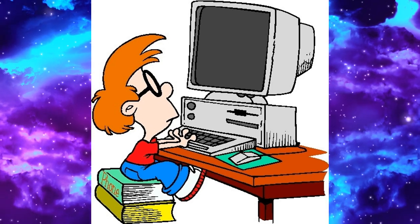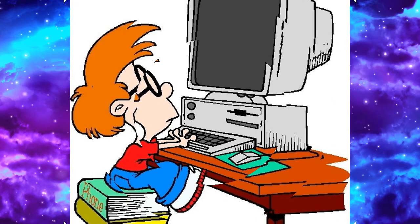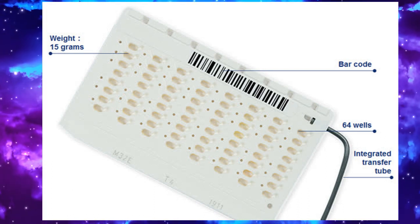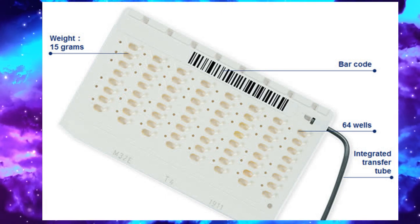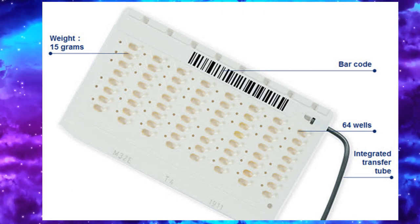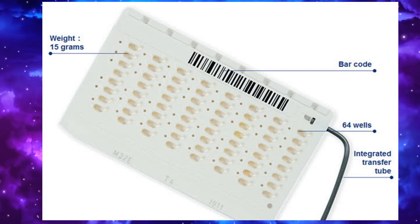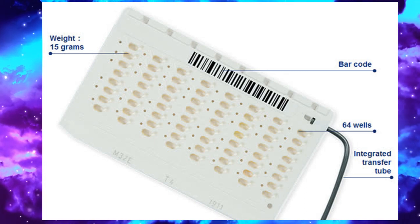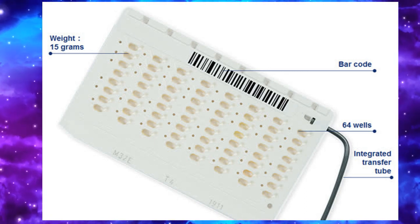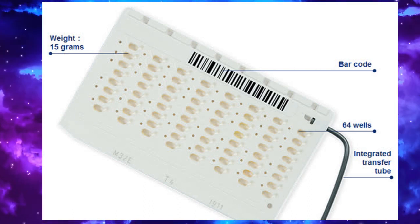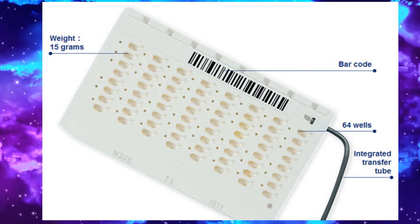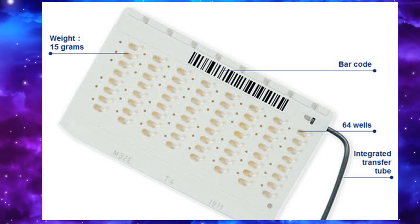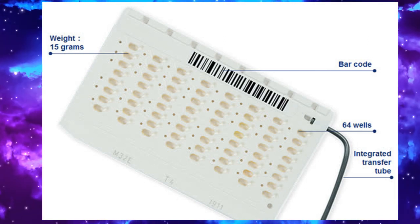For example, in Vitek 2 system, a miniaturized card of dimension 10 cm by 6 cm by 0.5 cm and weighing roughly around 16 grams is used. It has 64 wells with multiple concentration of antimicrobial agent and a filling tube on the side of the card. The antibiotic is in dehydrated form which gets rehydrated when the organism suspension is introduced into the card through automated filling process.